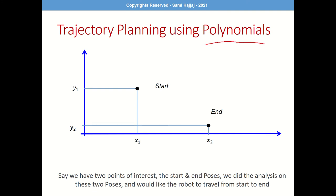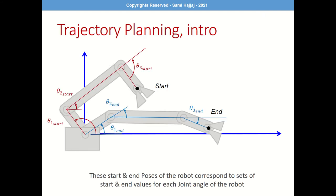That is why the answer could come from polynomials. A polynomial is a mathematical equation we love in mathematics because it can be easily differentiated, letting us work with the full family of equations — position, velocity, acceleration. We have a starting point and an ending point, and these correspond to the robot configurations we discussed earlier — defined by specific sets of joint angle values at the start and at the end.